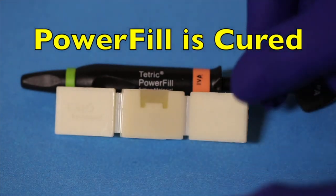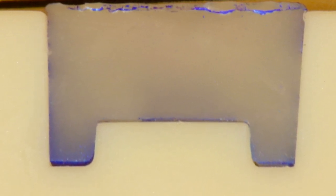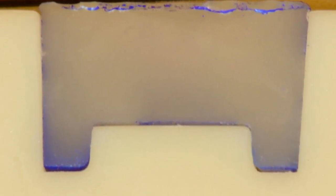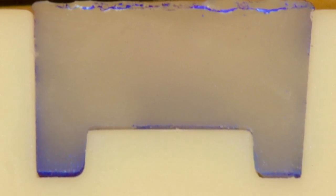Despite the shorter curing time and the fact that we placed this in one increment, you can see that the material is cured even at the bottom of the proximal boxes. Here we can see a close-up and there are no knit lines in this restoration.